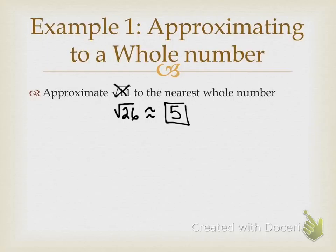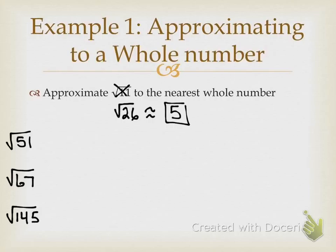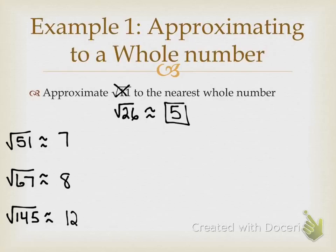If you put it in your calculator, it's going to be a really long decimal, but it's going to be just about 5. Now approximate the square root of 51, the square root of 67, and the square root of 145 to the nearest whole. Remember, if it's approximated, we use our squiggly signs — that's our approximation symbol. Square root of 51 is approximately 7, because 51 is pretty close to 49, and 49 is a perfect square. 67 is approximately 8 — 67 is real close to 64. Square root of 145 is going to be about 12. So I'm just finding the closest perfect square and then taking the square root of that.